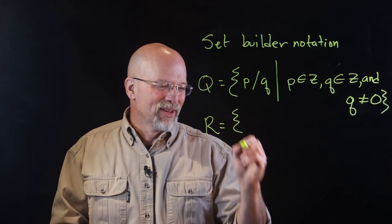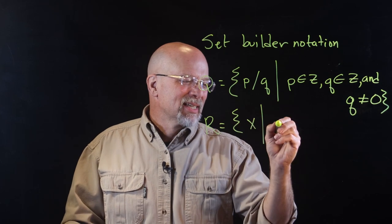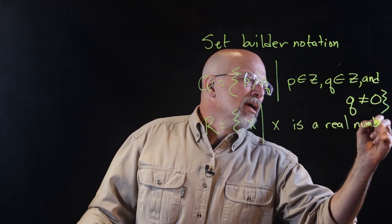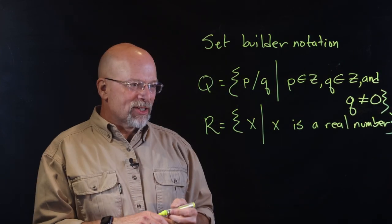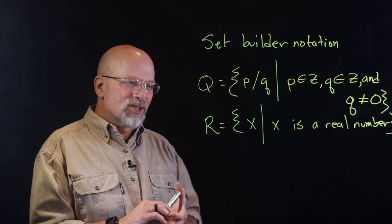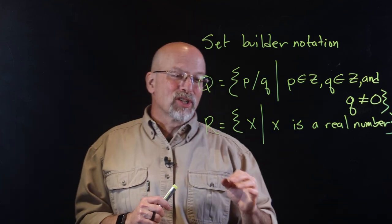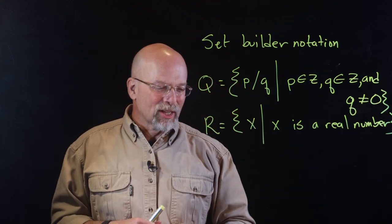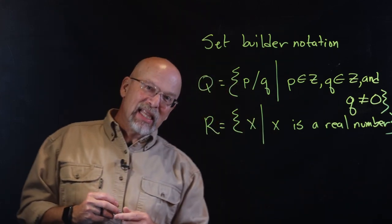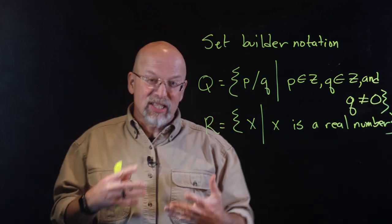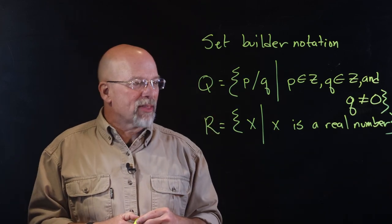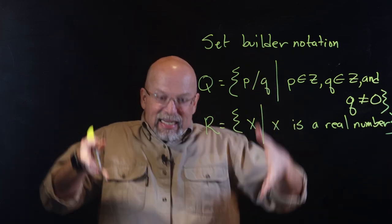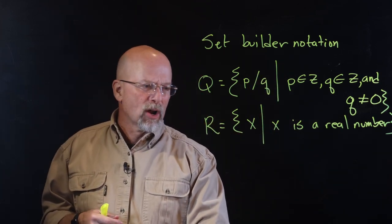There is a set that encompasses all of the real numbers — it's R, the real numbers: {x | x is a real number}. This is a class on discrete math, so we'll talk mostly about numbers that are discrete — where you can create a set and pretty much enumerate all of them out.